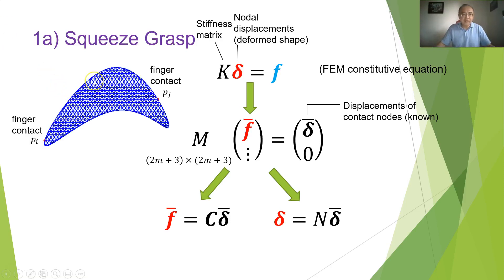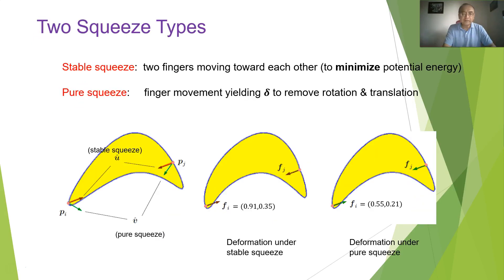And it also allows us to compute the displacement of all the nodes. These nodes don't have forces exerted on them if they're not in contact with the fingers, but they do have displacements. And these displacements, these nodal displacements will completely determine the deformed shape.